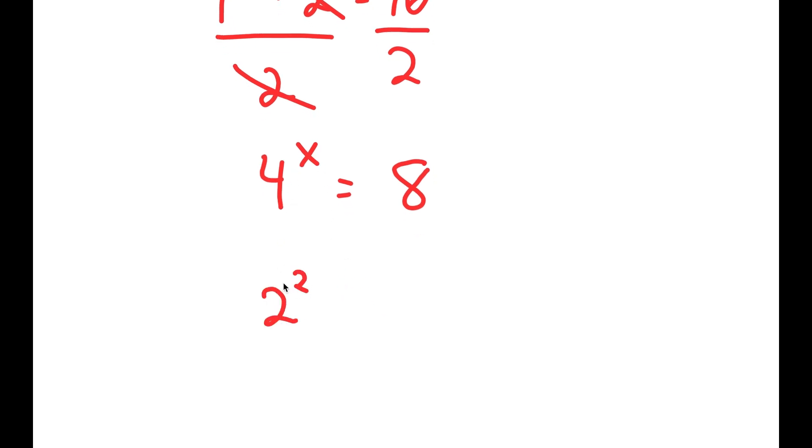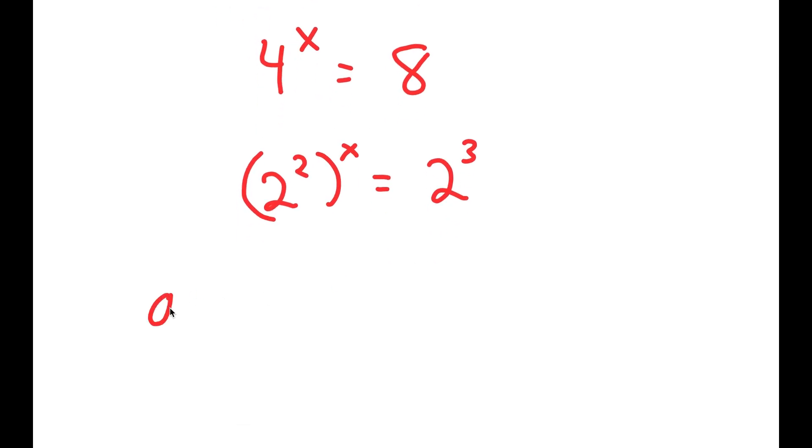Now 4, I'm going to rewrite as 2 squared, and 8, I'm going to rewrite as 2 to the power of 3. So if I have something in the form a to the power of m to the power of n, this is equal to a to the power of m times n.